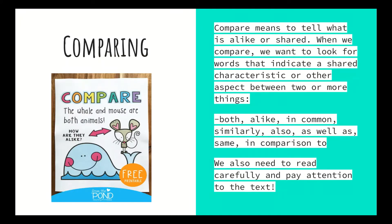Just to reiterate, because it's easy to get these things mixed up: compare means to tell what is alike or shared. When we compare, we look for words that indicate a shared characteristic between two or more things. For example, a whale and a mouse are very different creatures, but they are both animals — they share the fact that they are both animals. Words that indicate comparing include: both, alike, in common, similarly, also, as well as, same, in comparison to.